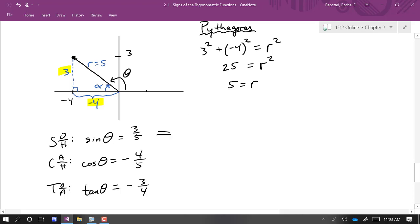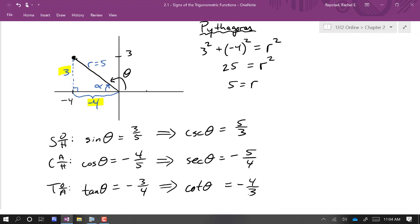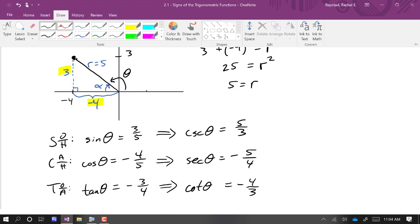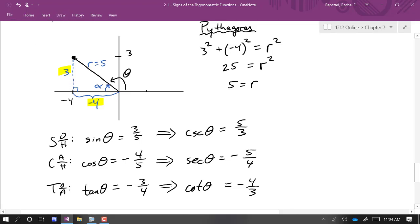Now from these three, we can get the other three. The other three are defined just to be the reciprocals of these functions. So the reciprocal of sine is cosecant theta is 5 thirds, secant theta is negative 5 fourths, and cotangent theta is negative 4 thirds. So our same techniques that we used when we did similar problems last semester, for pre-calc one, will work here as long as we account for the signs of the functions, like whether or not they're positive or negative in the quadrant that we're in.